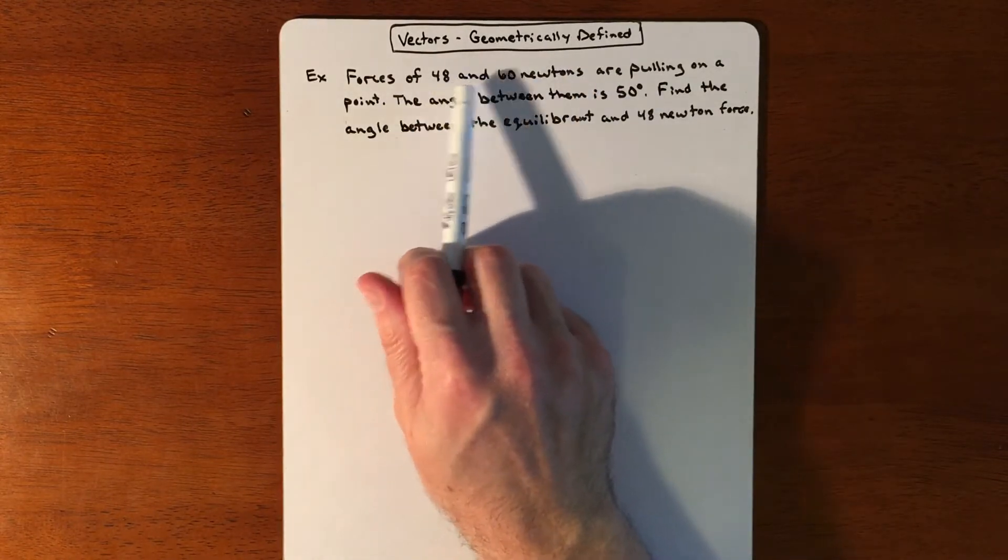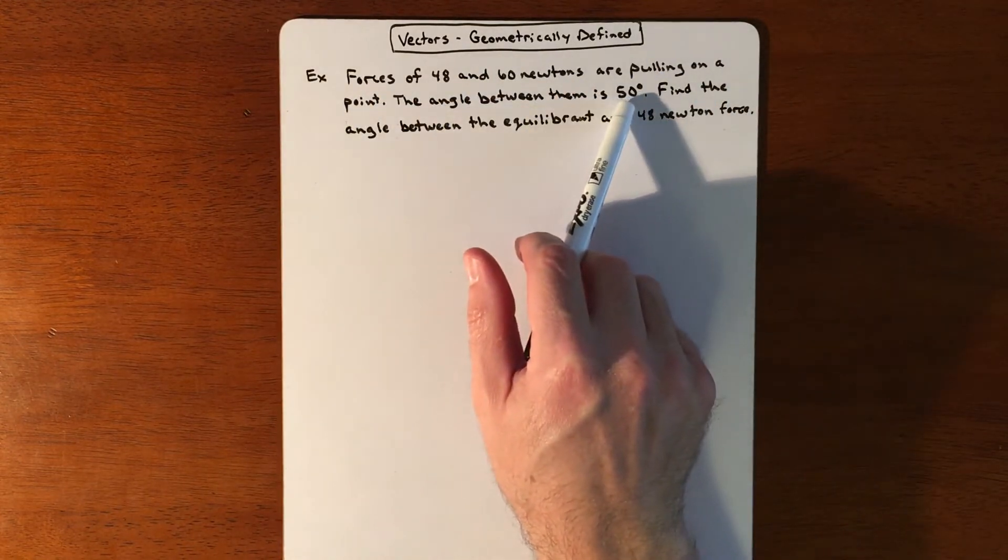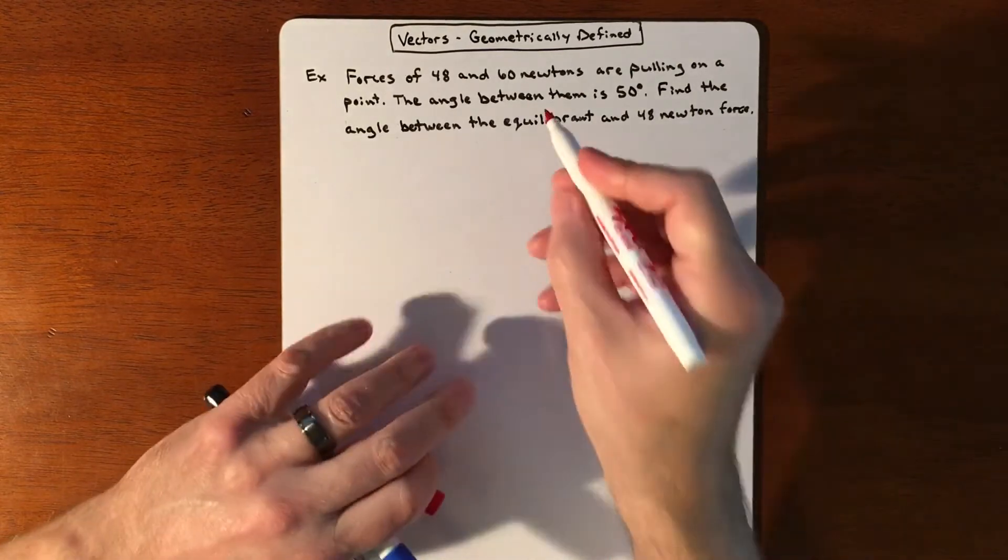So we have forces of 48 and 60 Newtons that are pulling on a point. The angle between them is 50 degrees. We want to find the angle between the equilibrant.